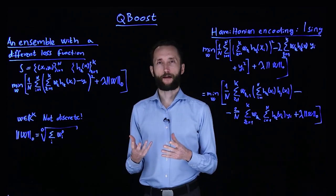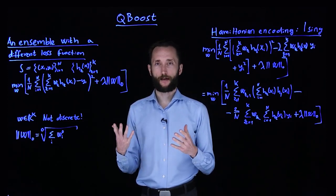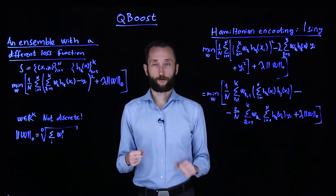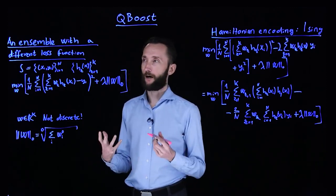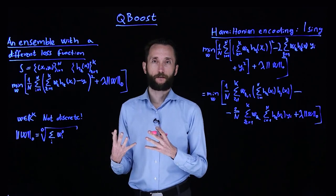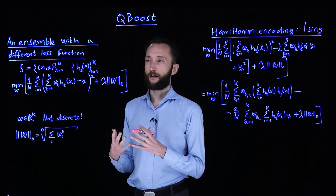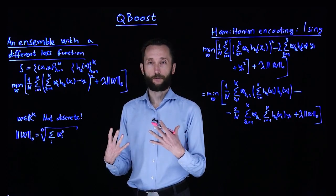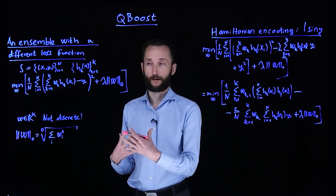So when we talk about AdaBoost, we mentioned that we used an exponential loss and there was no regularization term. So let's take a look at how we can come up with a different objective function that would map better to a quantum computer and that would give some kind of an advantage over the classical method.